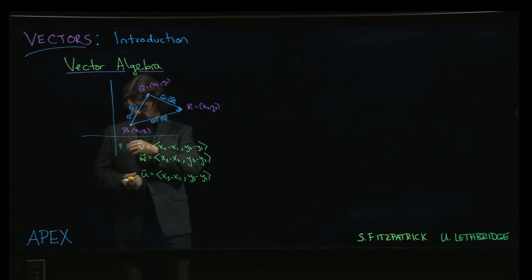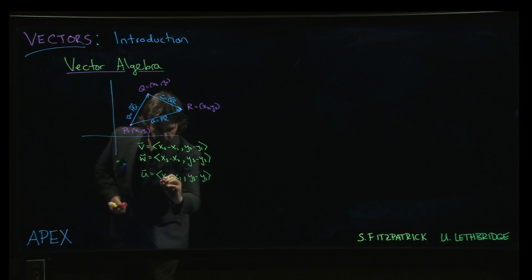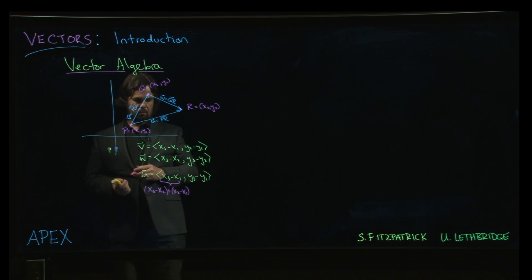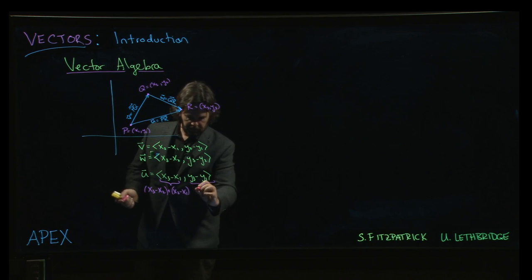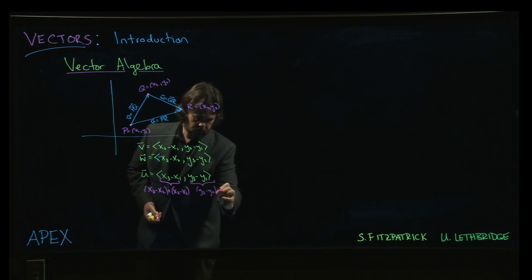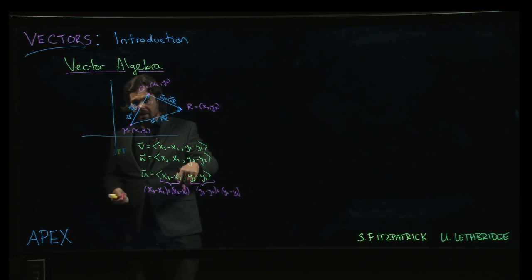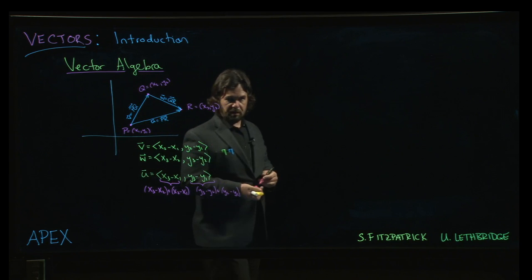But one of the things that you might notice here is that x3 minus x1, I could write that as x3 minus x2 added to x2 minus x1, because if I add those two together, the x2s are going to cancel out. Same thing here for the ys. I can do y3 minus y2 added to y2 minus y1. Of course, I could have added them in the other order.